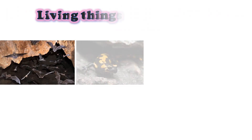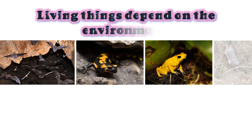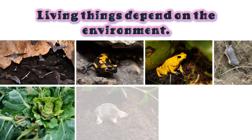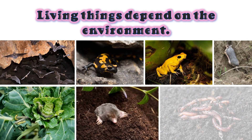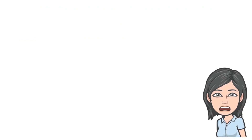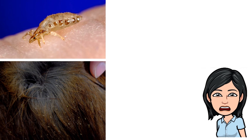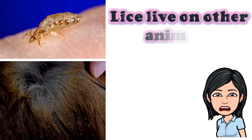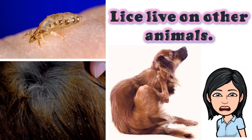Living things depend on the environment for shelter, which can be caves, the soil, plants, and other animals. For example, lice live on other animals.